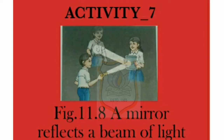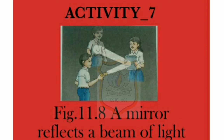Activity 7 is about showing that shiny polished surfaces like mirrors reflect light better than other surfaces. Things needed: a torch, a plane mirror, and a book. Method: You need two or more friends and a dark room. Ask one friend to hold a mirror at one corner of the room, and another friend to stand in the opposite corner. You stand in another corner with a torch. Switch on the torch and direct the beam onto the mirror. Observe the beam of light on the other side. Adjust the mirror direction so that the beam of light falls on your friend standing in the dark room.